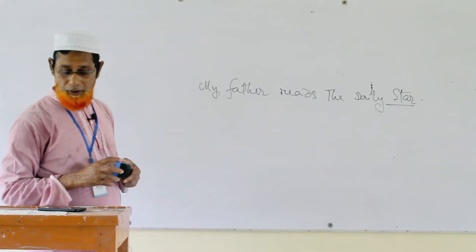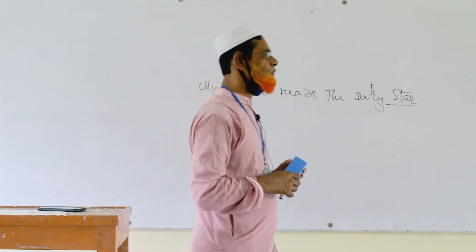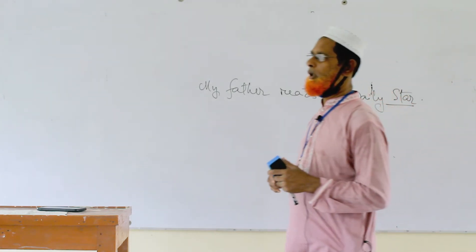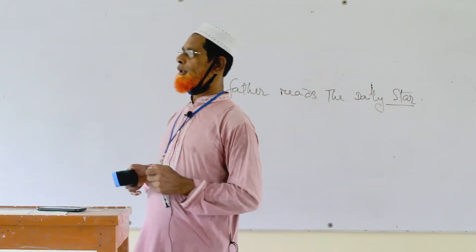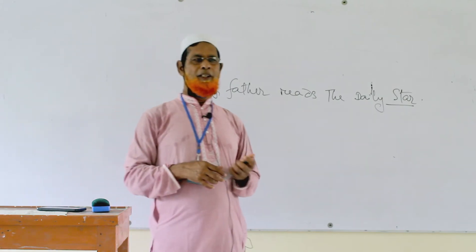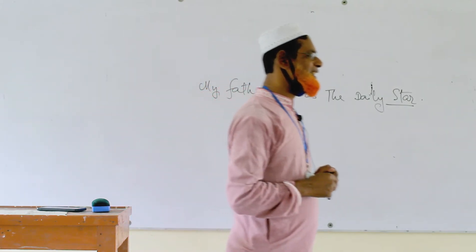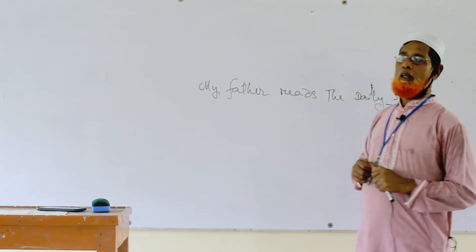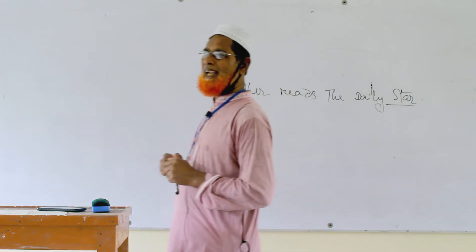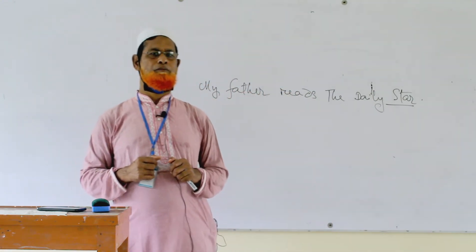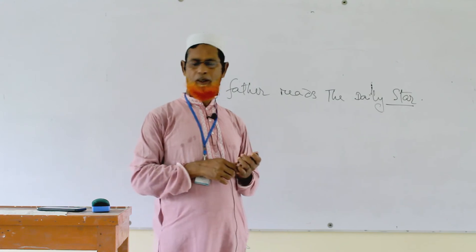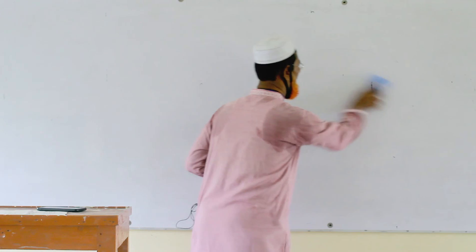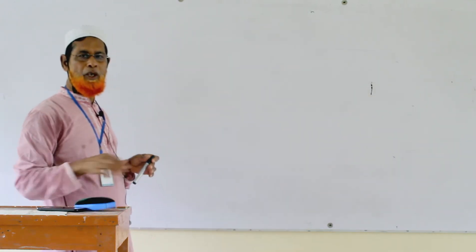Number seven: we know there are two letters that can be used as a word. One is A and another is I.